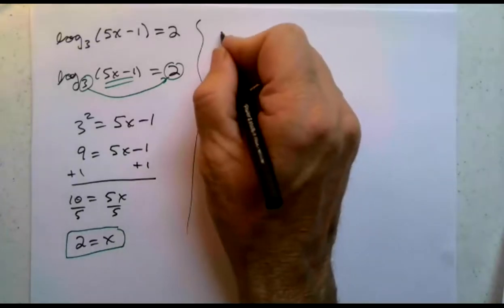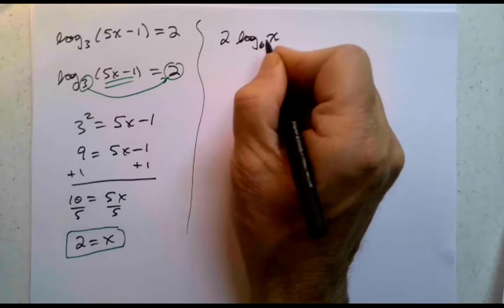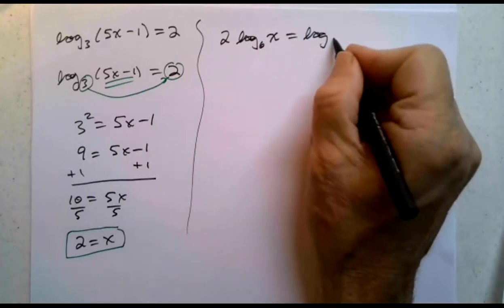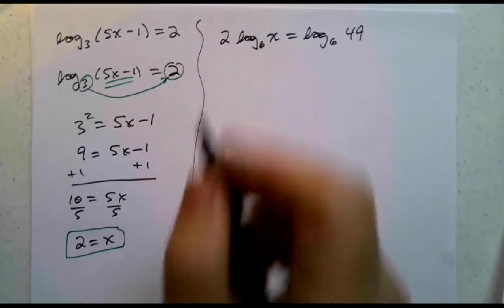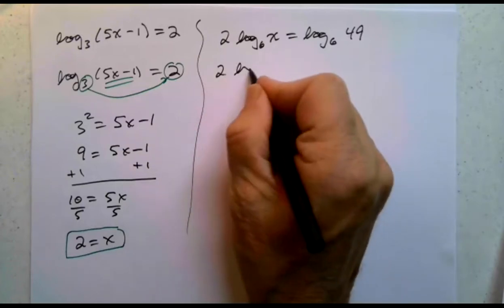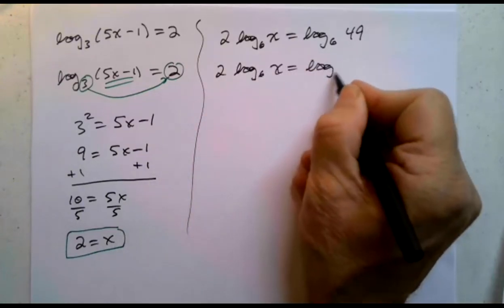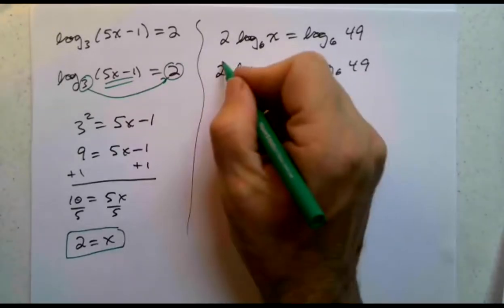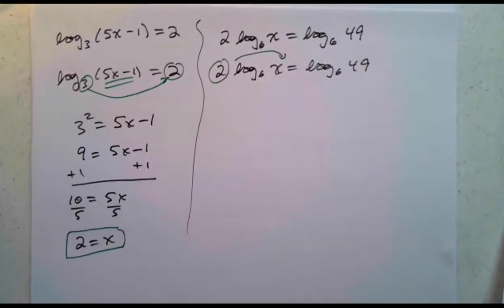Okay, next up we have 2 log base 6 of x equals log base 6 of 49. How are we going to work with this? Well, the exponent can go up. So this exponent of 2 can move up there.